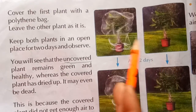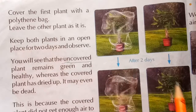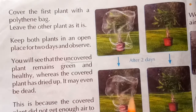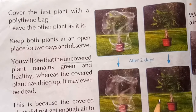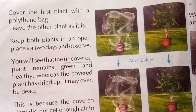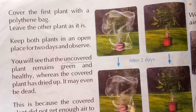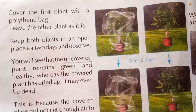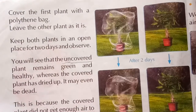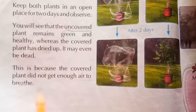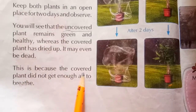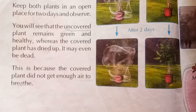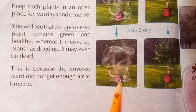Take two plants, cover one with polythene and keep the other in an open place. After two days you will see the open plant, which we did not cover with polythene, is fresh. But the other plant covered with polythene has dried up. This is because the covered plant did not get enough air to breathe.